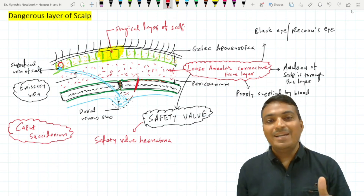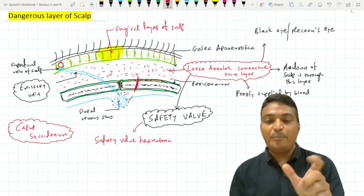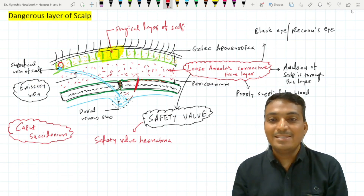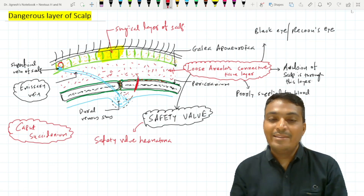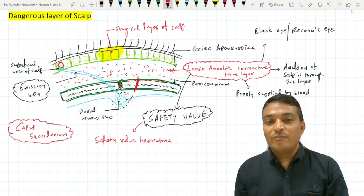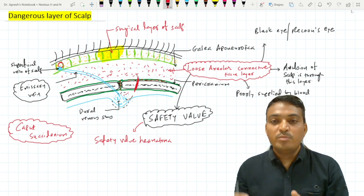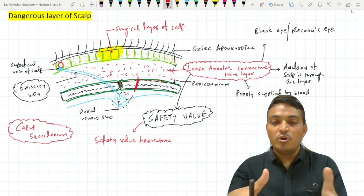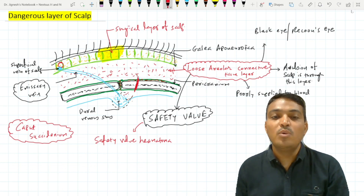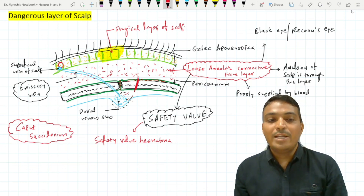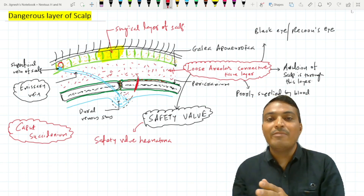One more clinical term concerned with the loose areolar connective tissue layer is caput succedaneum. Caput succedaneum is the edematous swelling of the scalp of a newborn baby. At the time of delivery, if venous return is hampered through this layer due to pressure from forceps or instrumentation, it leads to edema of the loose areolar connective tissue layer. This is called caput succedaneum, and it is temporary — it fades away with time.